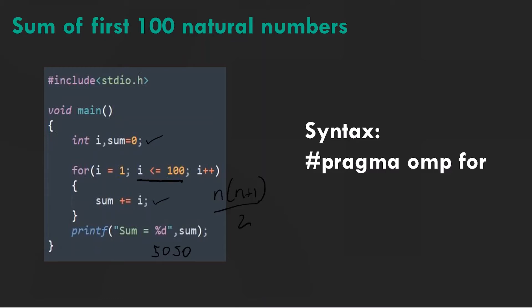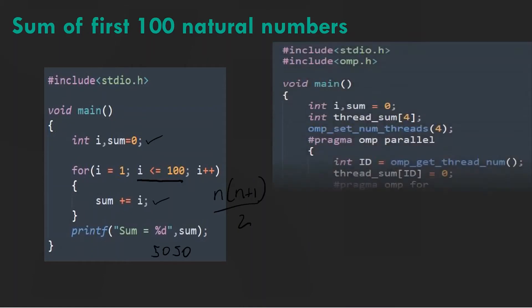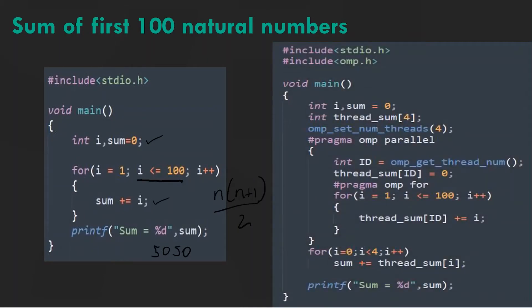So coming to the modified code, to use any OpenMP constructs we need to first include the necessary header files, which is done by including omp.h. In our declaration of variables you must have noticed a new array thread_sum of size 4. This array will be storing some intermediate values. You will understand what that means pretty soon.